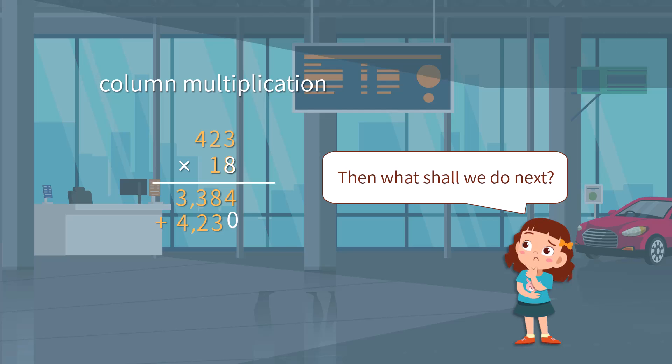After all of this, what we need to do is simply do multi-digit addition with partial products. 3,384 plus 4,230. By regrouping every digit, we have 7,614 as the final product.